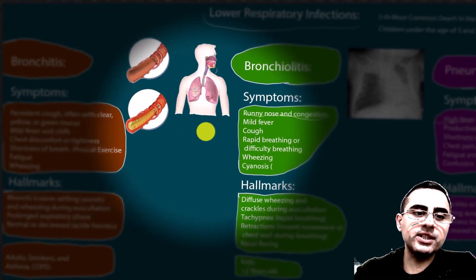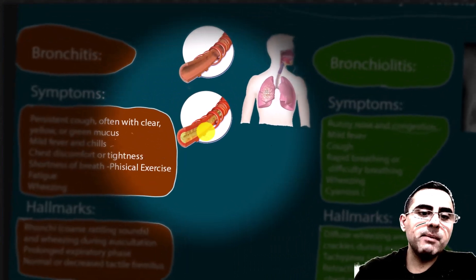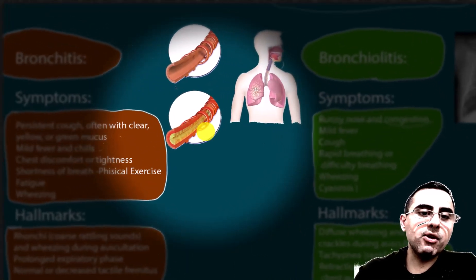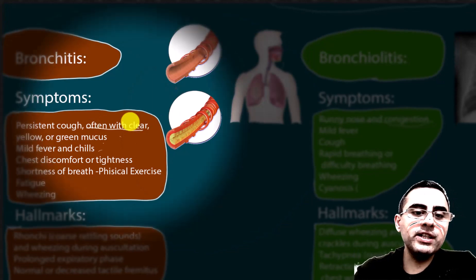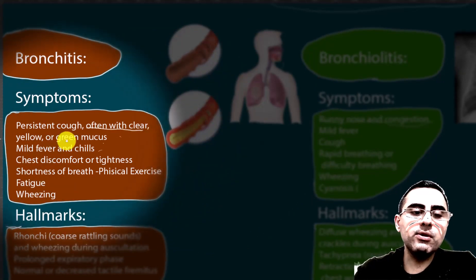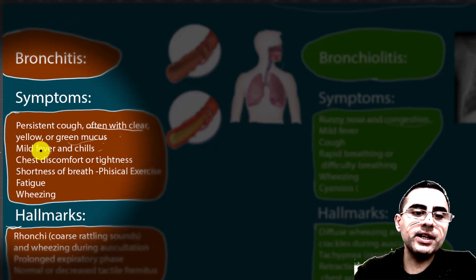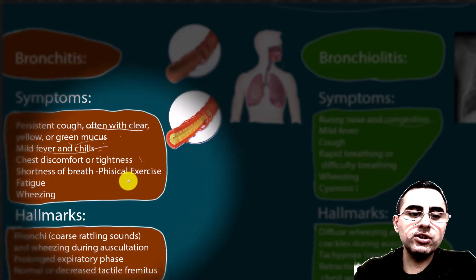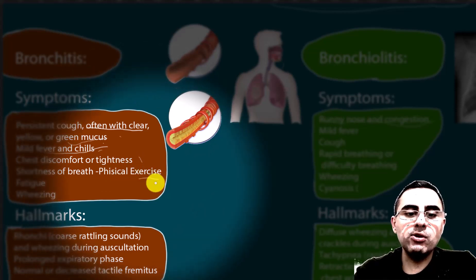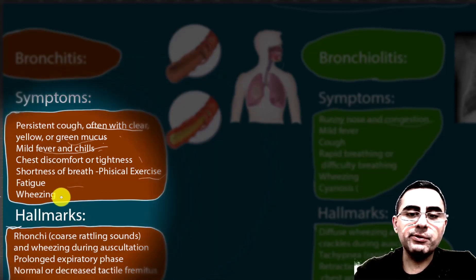Let's start with symptoms. Most common symptoms of bronchitis include persistent cough with often clear, yellow, or green mucus; mild fever and chills; chest discomfort or tightness; shortness of breath or dyspnea on physical activity; fatigue; and wheezing.